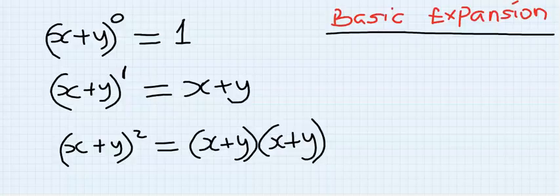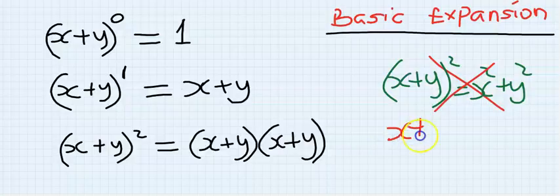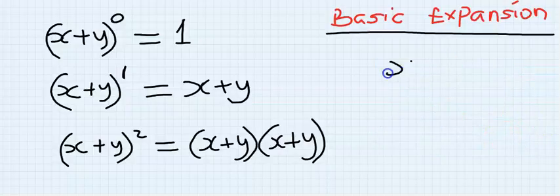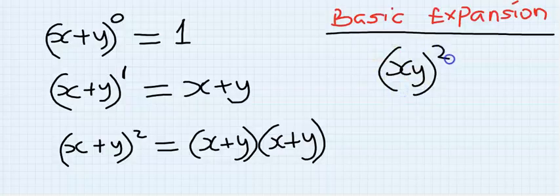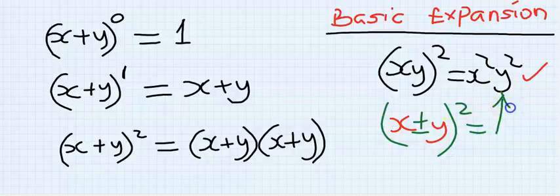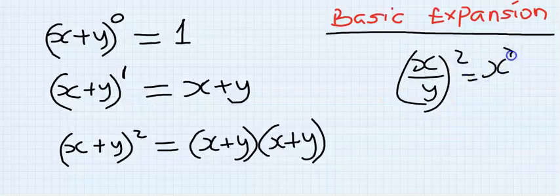I want to make a correction about a mistake some students make. (x + y)² cannot be written as x² + y² — this is wrong. The square outside the bracket just means the bracket is expanded twice. However, if x and y are multiplied and we have a square outside, you can write x²y² — that is correct. But if x and y are separated by plus or minus with a square outside, you cannot do it that way. If it's division with a square, you can write it as separate squares — and that is correct.